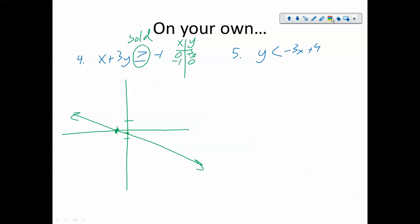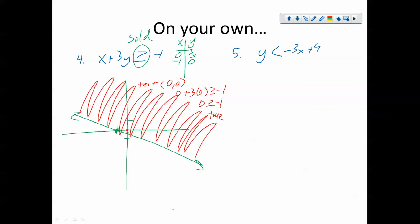And now I'm going to test which side has solutions. So I'm going to pick zero, zero, because that one's on one side, and that's an easy one. And so that's zero plus three times zero is greater than or equal to negative one. That is, zero is greater than or equal to negative one. True statement? True statement. And because that's true, we're going to shade everything that is on the same side as zero, zero. So that's my graph.